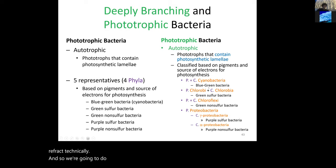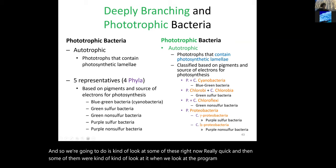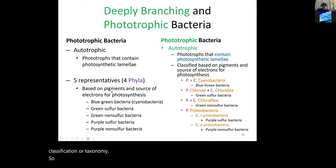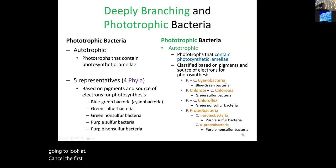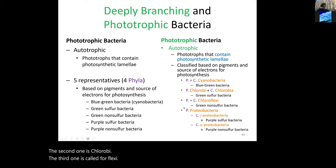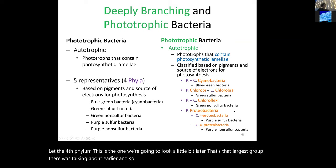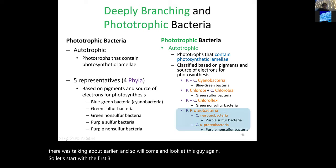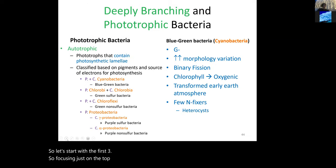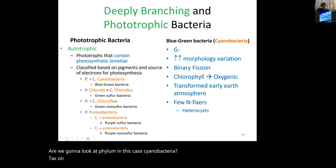There are five organisms of interest here but only four phyla we'll look at. The first phylum and class is cyanobacteria. The second is Chlorobi. The third is Chloroflexi. The fourth phylum — the largest group — we'll return to later when we cover proteobacteria. Let's start with the first three.